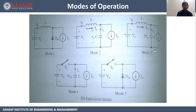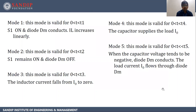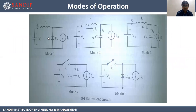We are going to see the operation in 5 modes. Mode 1 is valid for 0 to T1. S1 is on, diode DM conducts, and IL increases linearly. This is the equivalent circuit of Mode 1. Mode 2 is valid for 0 to T2. S1 remains on and diode DM is off. This is the equivalent circuit of Mode 2.